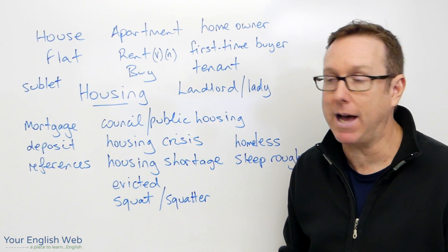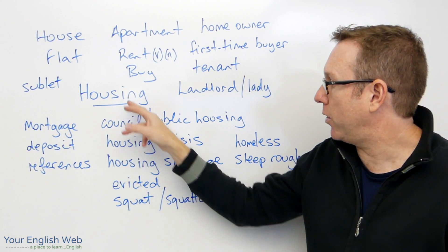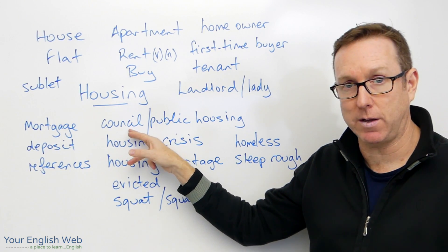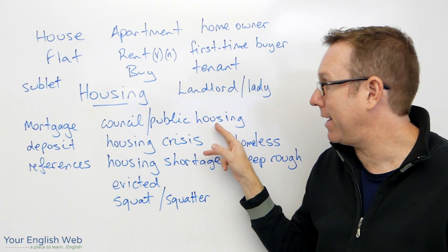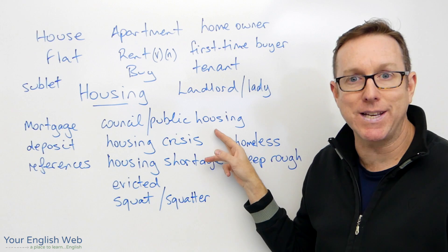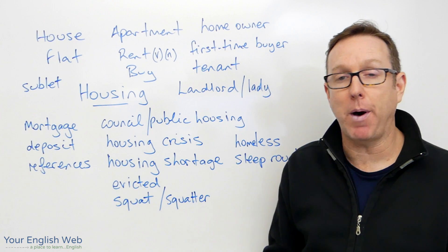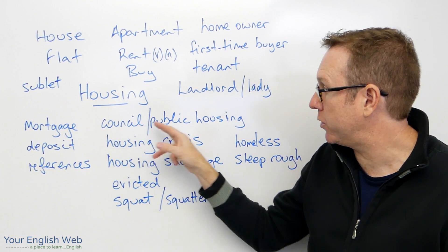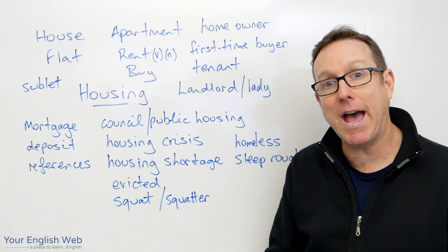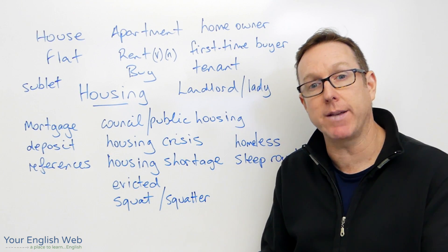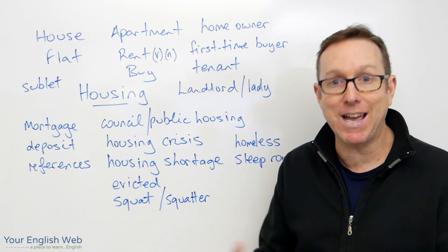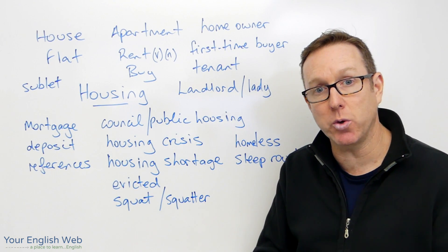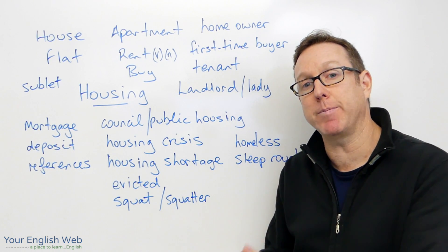Housing can be private — if we buy, it's private housing. But we can also have public or council housing, which is housing owned by the government. They provide council or public housing at a cheap price to people who have economic or social problems and have trouble accessing other types of housing.